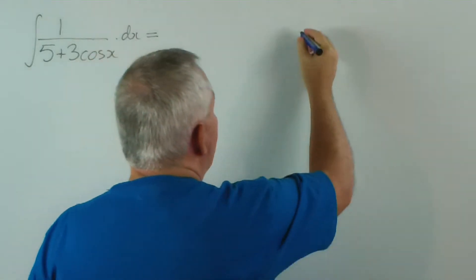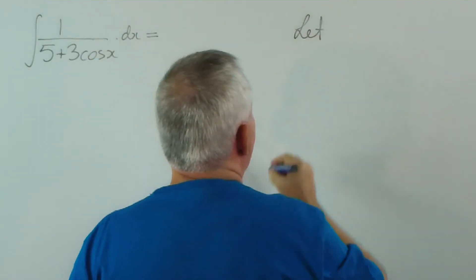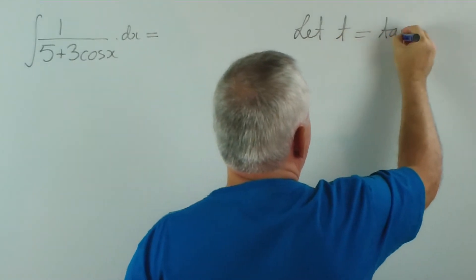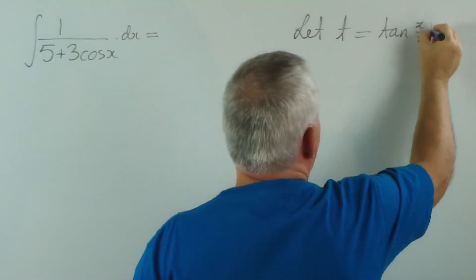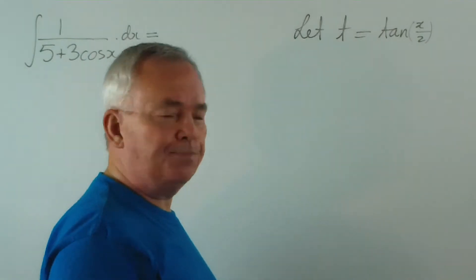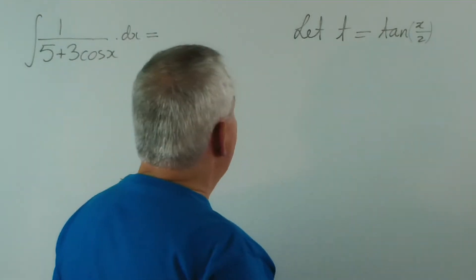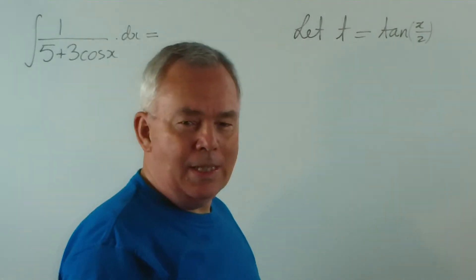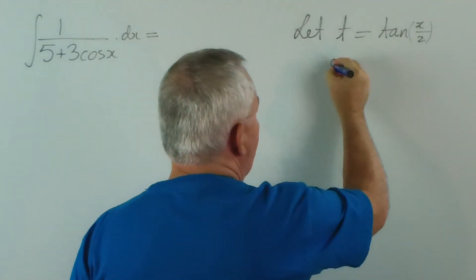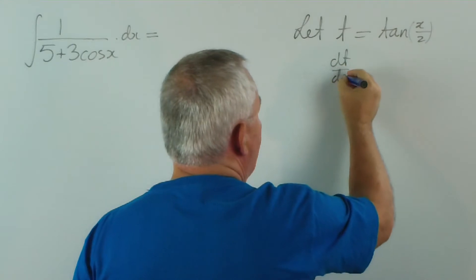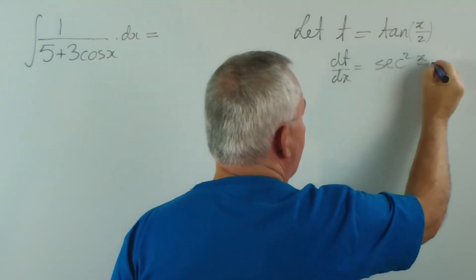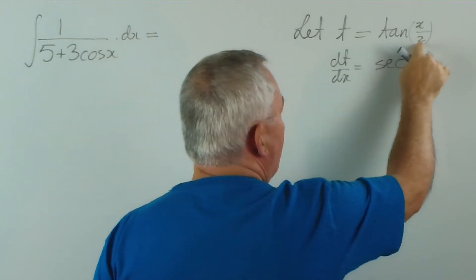So what we do is we make a substitution. We say, let t represent the tangent of x over 2, there's our half-angle. And first of all, I'm going to find out what dt/dx is, find the derivative. So dt/dx, the derivative of tan is sec squared x over 2, and then we multiply by the derivative of x over 2.